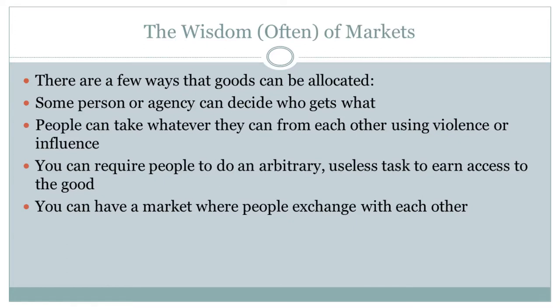But we're also going to think about some of the other ways that we could be allocating stuff, because markets are not the only way to do that. For example, you could have just some person sitting in a room somewhere deciding who's going to get what. You could have violence or influence being the way that you allocate stuff — whoever can beat each other up gets to take it. That's one possibility, and certainly a lot of humanity has lived their lives in that way.